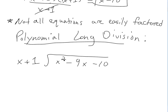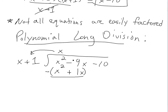You have to figure out what to multiply by to get from x to x squared — in this case that's x. So you put an x up top, then multiply x by both terms in the divisor to get x squared plus x. Then you subtract, just like in regular long division — these cancel and you're left with negative 10x.